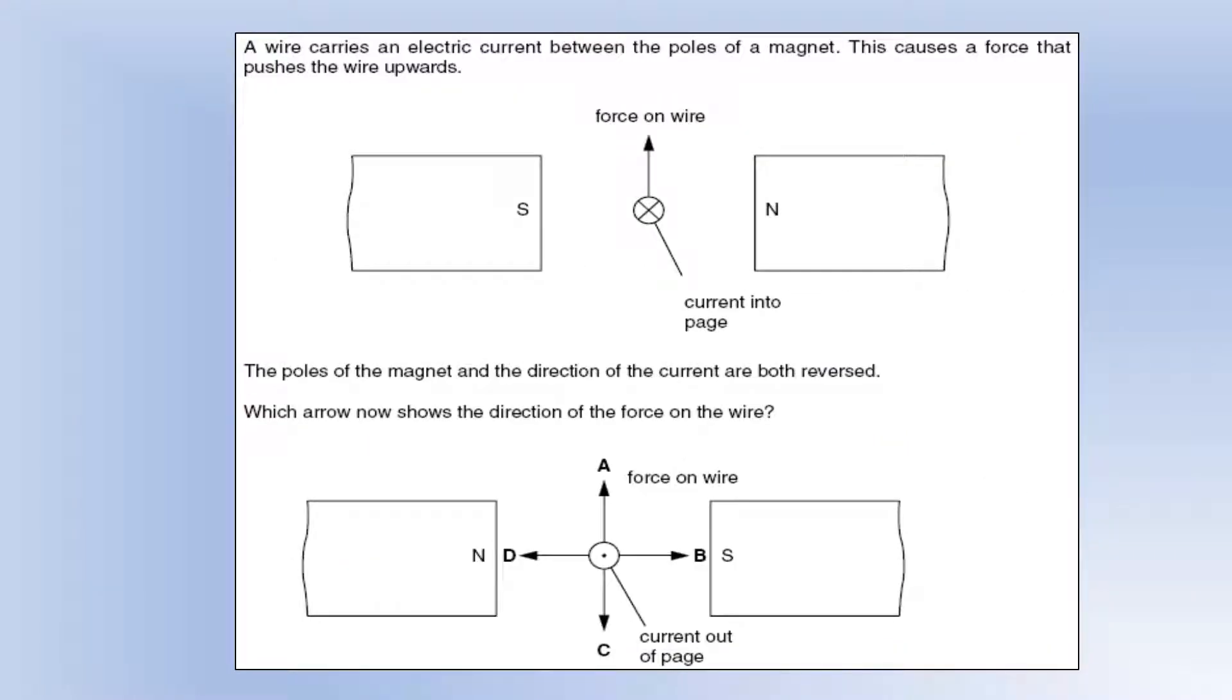A wire carries an electric current between the poles of the magnet. This causes a force that pushes the wire upwards. The poles of the magnet and the direction of the current are both reversed, which arrow now shows the direction on the force on the wire. So any one of those changes on their own would have given you a force in the opposite direction. Because we've changed both, we're going to end up with a force in the same direction. So we can actually work out which way the current's going. If we've got our field line going from north to south, so from right to left, we've got the force upwards, that's our thumb. So the current here must be actually going into the page, which is actually what an X shows. If you see an X like that, it's a current into the page. So that follows Fleming's left-hand law. If we reverse the direction of the field and reverse the direction of the current, that's going to again give us a force upwards. So we can check our answer with Fleming's left-hand rule anyway.